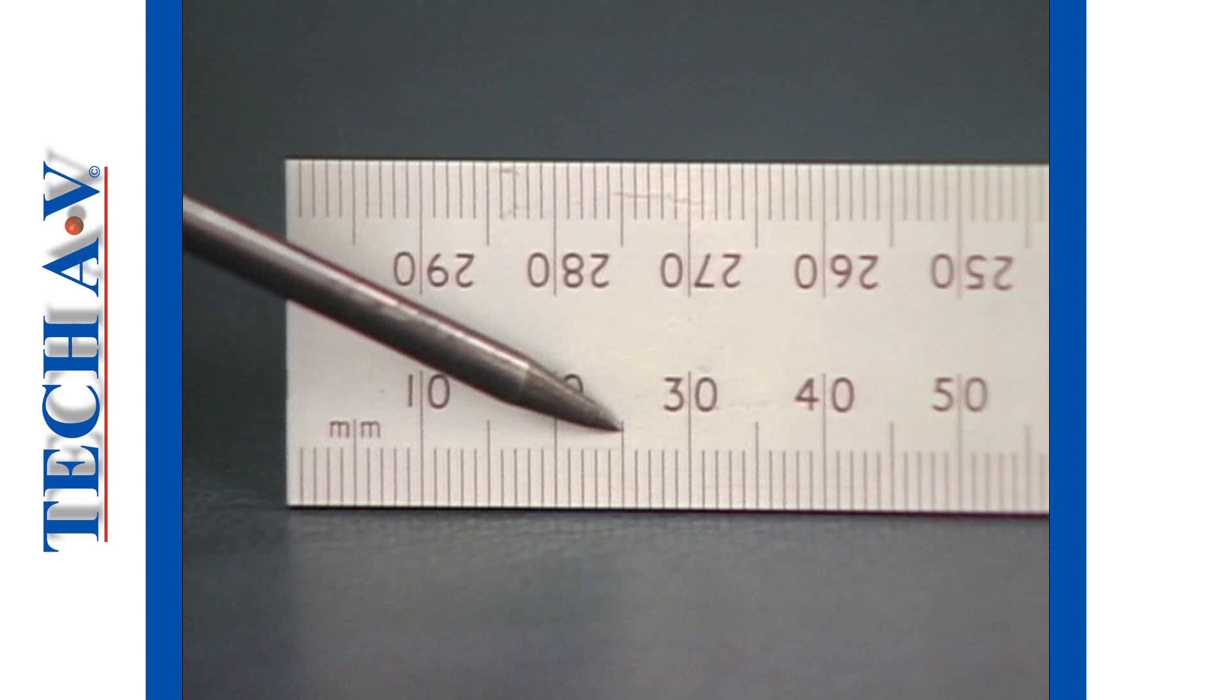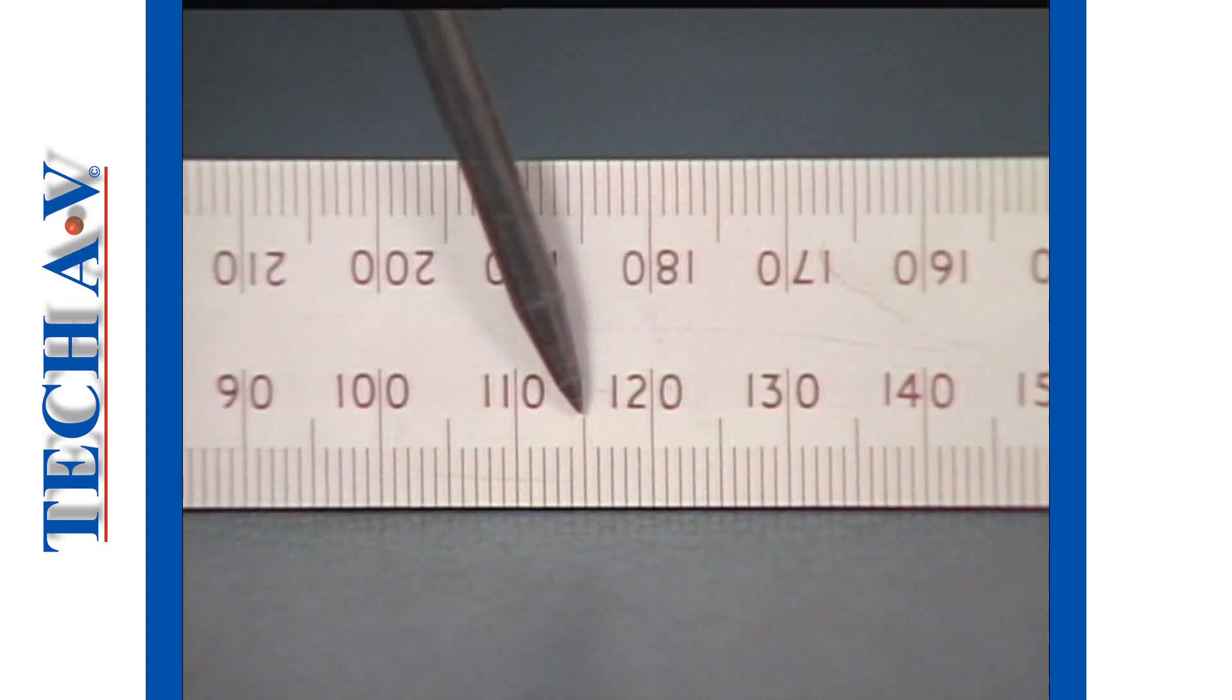As in other rules, you will see that every fifth millimeter line is made a little longer than the other millimeter lines. For example, this reading is 25 millimeters. And this reading is 115 millimeters.